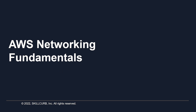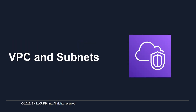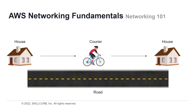AWS networking fundamentals: VPCs and subnets. Let's kick things off with understanding what networks are and how they work. Networking is actually pretty relatable to the real world. Say that you have something you want to send from your house to a friend's house — you get the thing, hop on a bike, and head to their home on paved roads. Think of the thing as data, the houses as clients, and the road as the network that allows the data packet — the courier — to move from one client to the next.